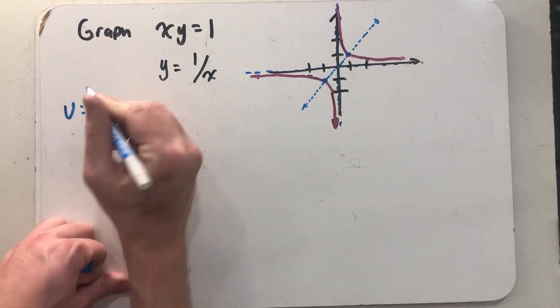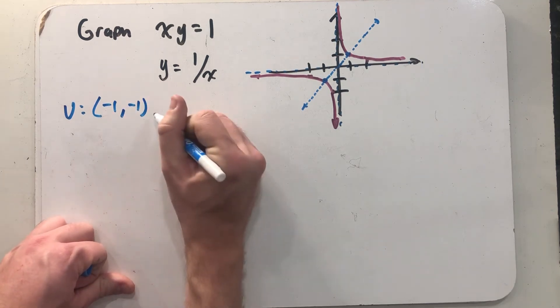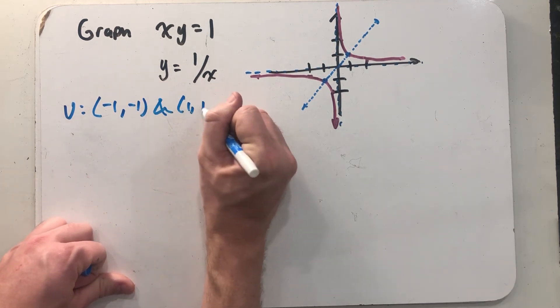So if I'm thinking hyperbolic things, I could very quickly write down the two vertices I see there.